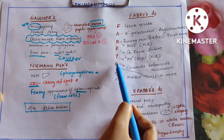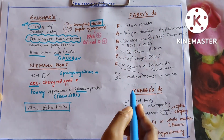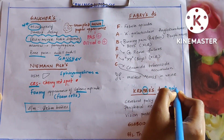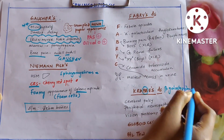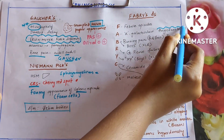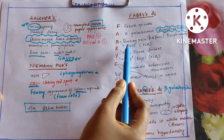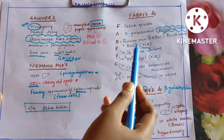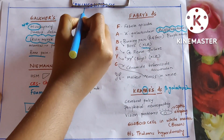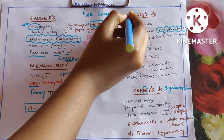Coming to Fabry's disease: F is febrile episodes, A is alpha-galactosidase and angiokeratomas. Whereas beta-galactosidase is double B — that is Krabbe's. B-B means burning pain of hands and feet because of peripheral neuropathy, and B for boys — X-linked recessive. So Fabry's is X-linked recessive in sphingolipidosis; the rest are autosomal recessive.